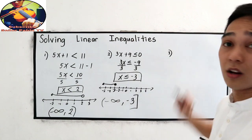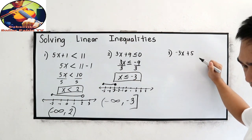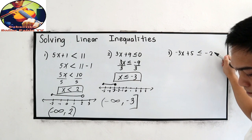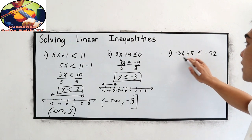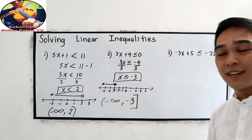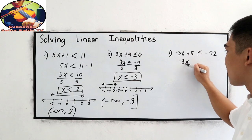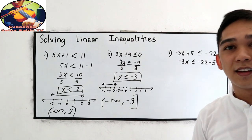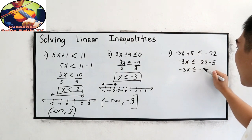Third example: negative 3x plus 5 is less than or equal to negative 22. First step — isolate the variable. Transpose positive 5 to get negative 3x is less than or equal to negative 22 minus 5, which gives negative 3x is less than or equal to negative 27.